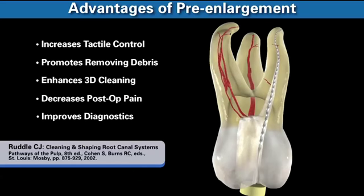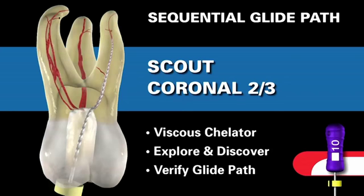The secret to pre-enlargement is filling the chamber with a viscous chelator for the sequential glide path. A viscous chelator gives three advantages: a superior lubricant, it emulsifies tissue by preventing re-adherence of collagenous vital tissue, and debris generated is more effectively held in suspension. Examples include ProLube, Glide, or RC Prep. Any time a file goes into any part of a canal where it has never been before, you need the viscous chelator.